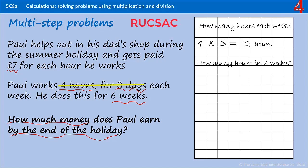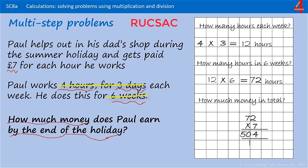Four times three is 12 hours a week. Now we need to know how many hours that is in six weeks, so we take those 12 hours and multiply by six. If you know your six times tables, you'll know that that's 72. Now that we've established he works 72 hours in the six weeks, we need to work out how much he's going to be paid for each of those 72 hours.